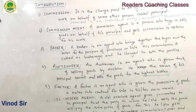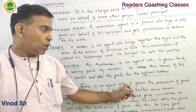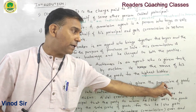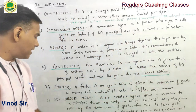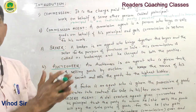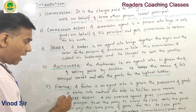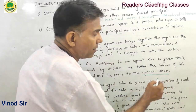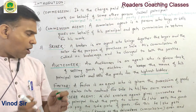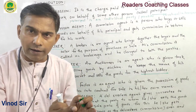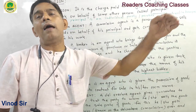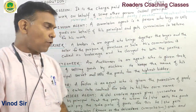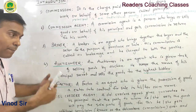A factor is an agent who is given the possession of goods by the principal and enters into a contract for sale in his or her own name. That means the factor sells the goods in their own name on behalf of the principal.